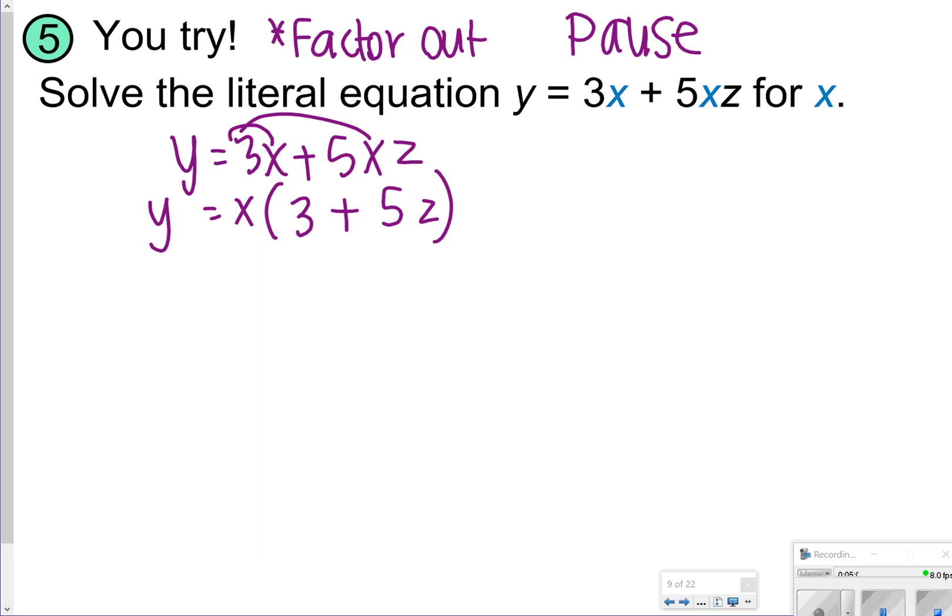And then all we have to do is one swoop divide by 3 plus 5z to move it over on the other side. So x will be equal to y over 3 plus 5z.